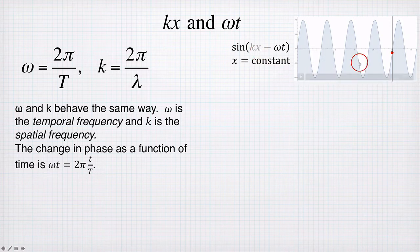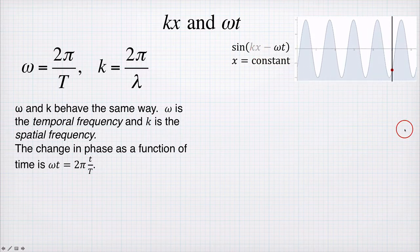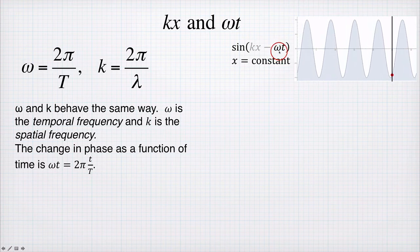And we choose a point in space, so x is a constant, and we look at the evolution of the surface of the wave at this point. And we see that it goes up and down, and the frequency of this oscillation, the angular frequency of this oscillation is omega, with a fixed point in space.